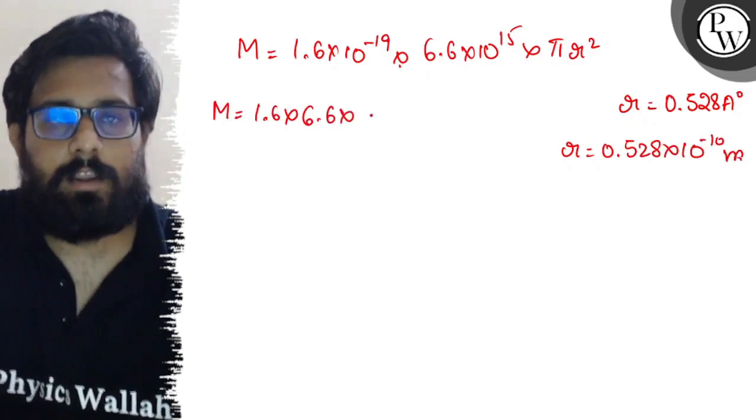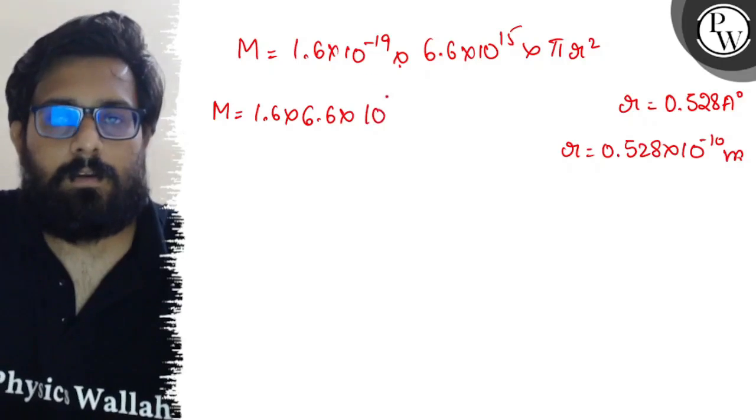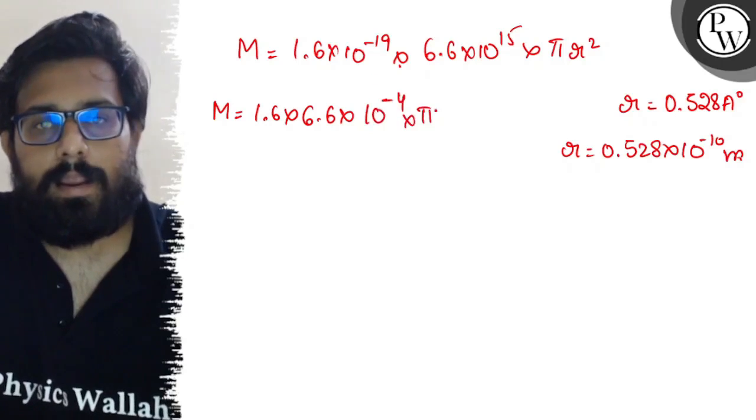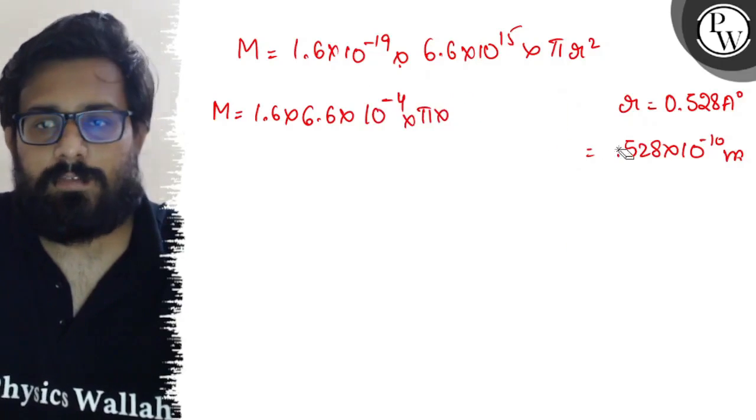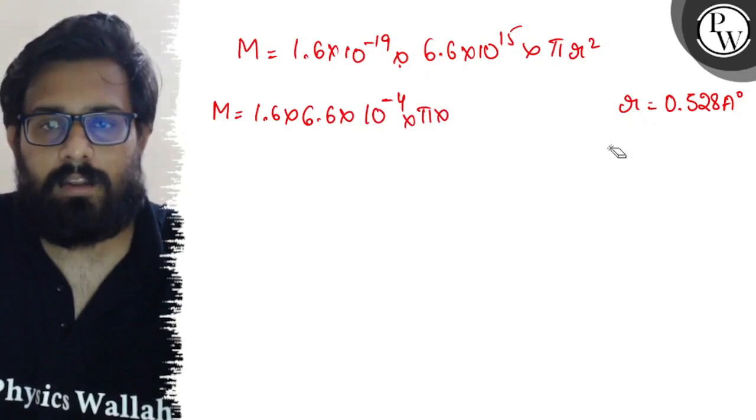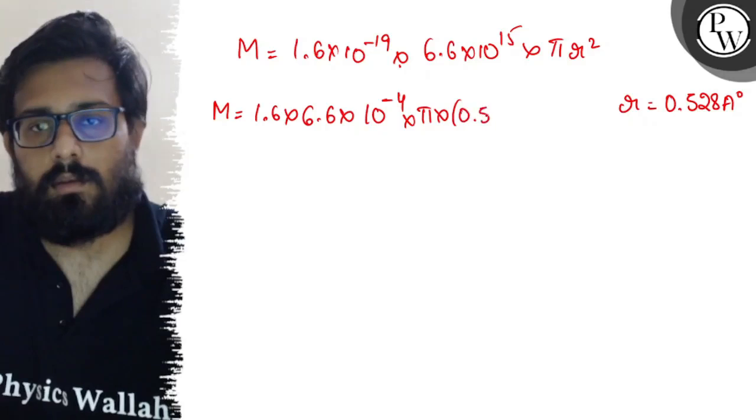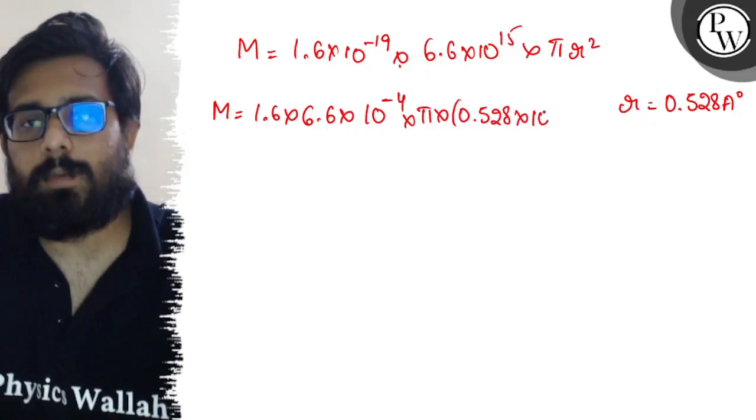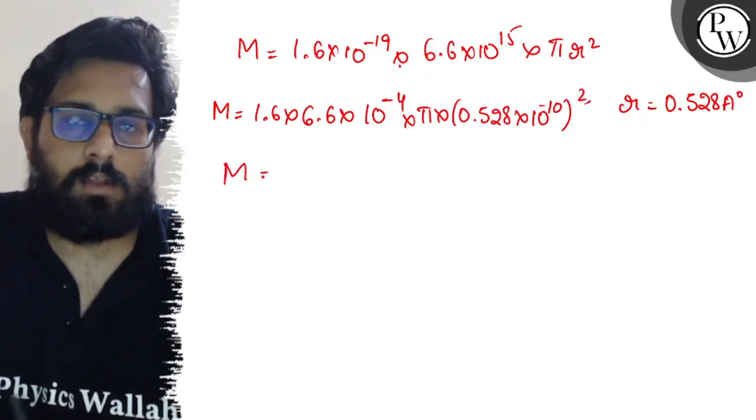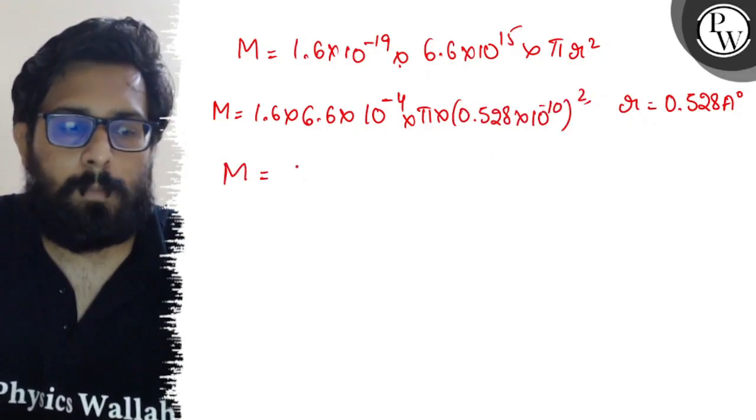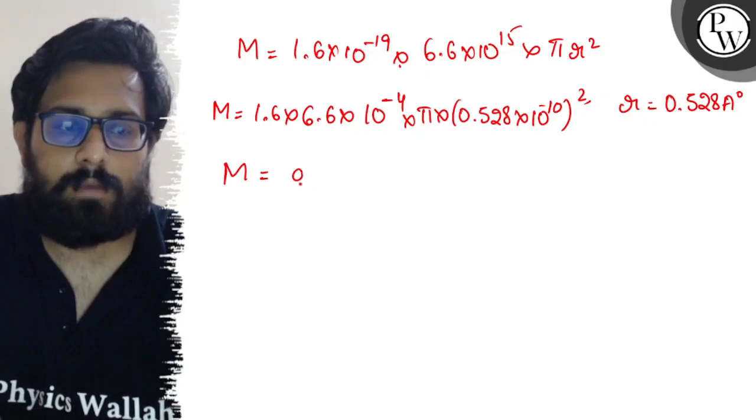From here, the value of M comes out to 1.6 × 6.6 × 10^-4 × π × (0.528 × 10^-10)². Once you solve this whole part, you will get a value of 9.244 × 10^-24.